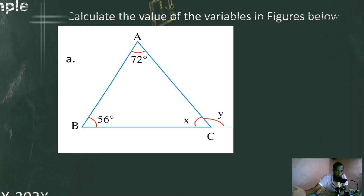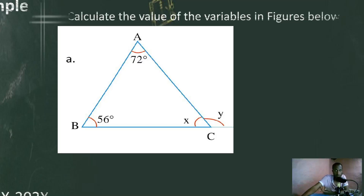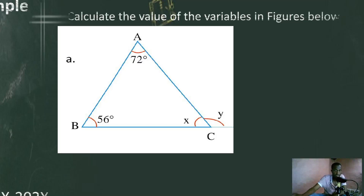Based on those properties, we can find and solve this equation. Calculating the value of the variable in the figure below: angle A is 72 degrees, angle ABC is 60 degrees, and angle BCA is X — we need to find it. We are asked to find angle Y.